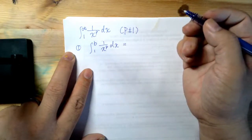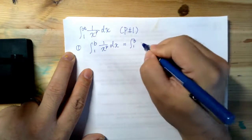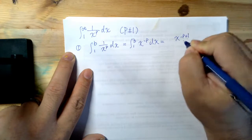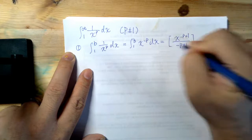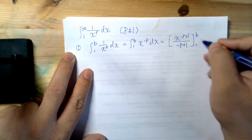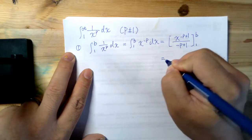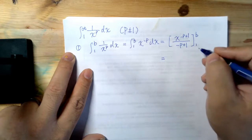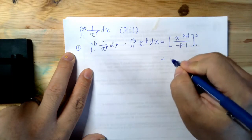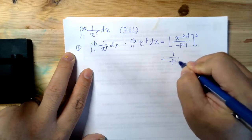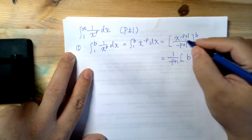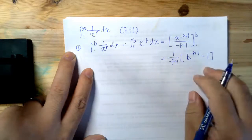First of all, I would like to evaluate the definite integral from one to b of one over x to the power of p dx. Based on what we have, we can rewrite this as x to the power of negative p dx, so we can evaluate this as x to the power of negative p plus one over negative p plus one, from one to b. So it is easy to evaluate this definite integral — all we need to do is plug in. This negative p plus one is a constant, so we can pull this out as one over negative p plus one, and then substituting x with b gives us b to the power of negative p plus one, and then one raised to any power is still one.